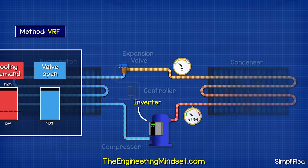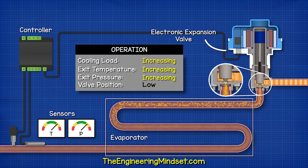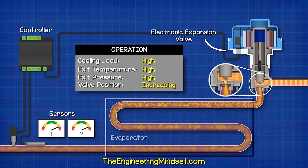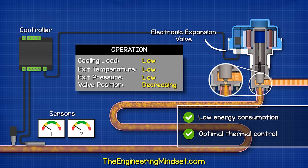Newer designs use a variable frequency drive to control the speed of the motor. And so, the volume of refrigerant flowing around the system changes to match the current cooling demand. This design uses an electronic expansion valve to achieve very precise control. This gives us great energy efficiency and also optimal thermal control.